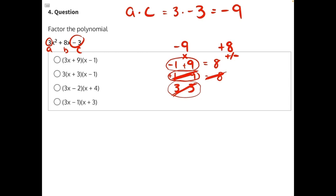...we can rewrite our expression: 3x squared plus 9x minus 1x minus 3. So what we have effectively done—this was the original expression, 3x squared plus 8x minus 3—we have taken 8x and split it up into two terms that when combined will give us that 8x term.